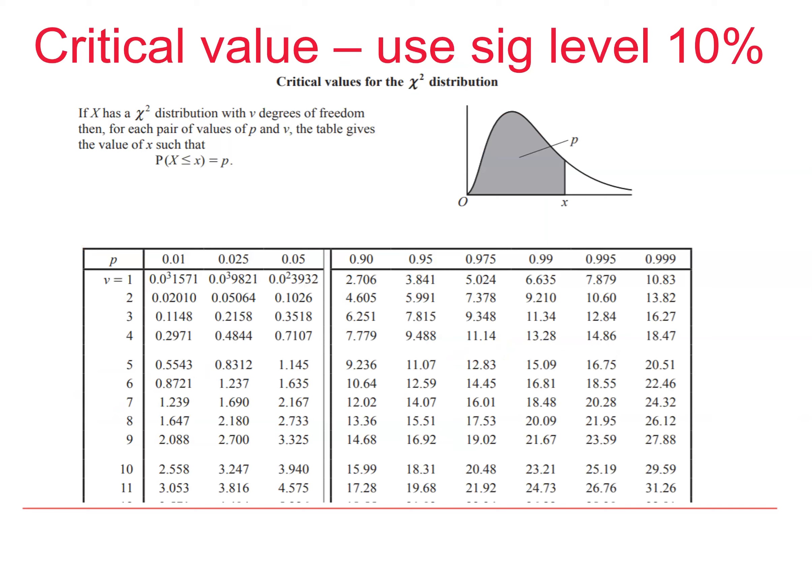Now we look up the critical value. Nu is 2, and we're working at the 10% level, so that p is 0.9. And we read off the critical value, 4.605.